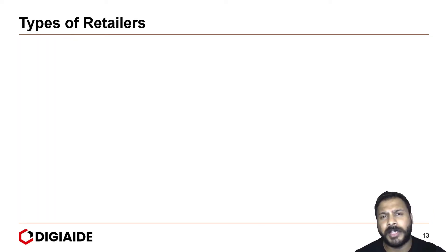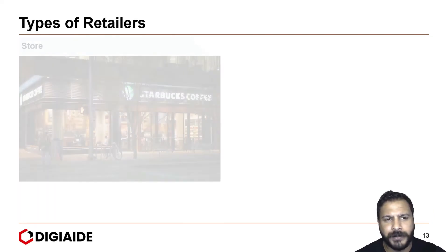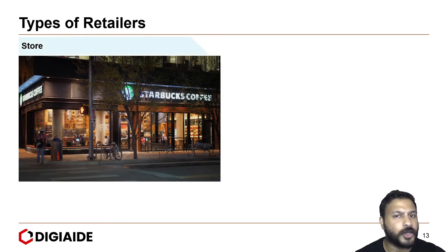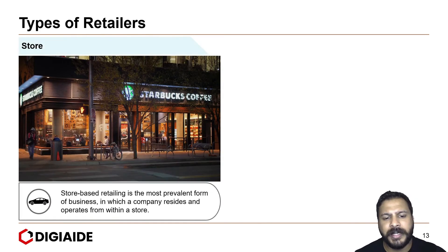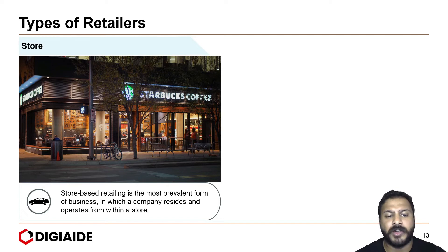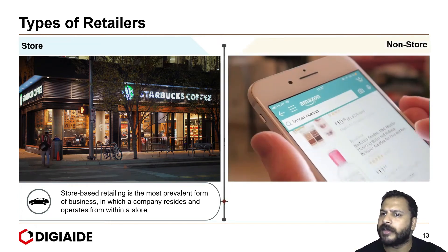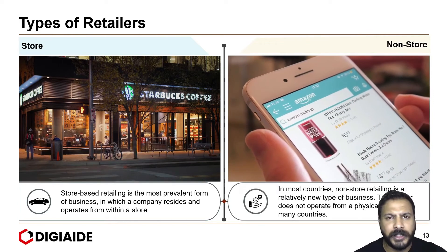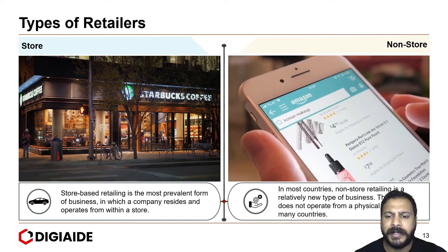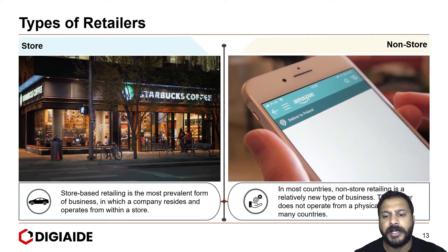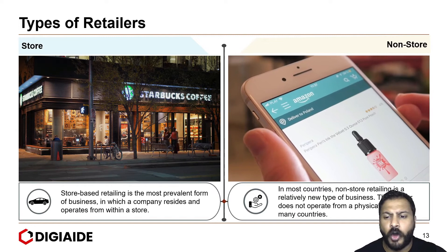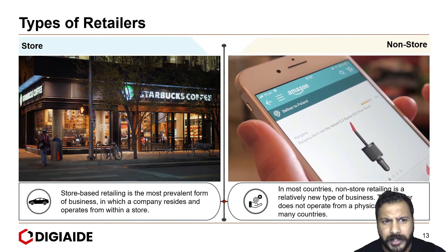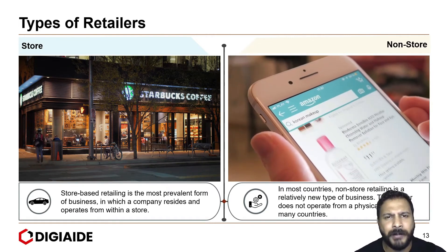Moving on to the types of retailers — broadly there are two types. The first is a store retailer. Store-based retailing is the most prevalent form of business in which a company resides and operates from within a store, such as Starbucks. On the other hand, there is something called a non-store retailer. In most countries, non-store retailing is a relatively new type of business where the retailer does not operate from a physical location — for instance, Amazon.